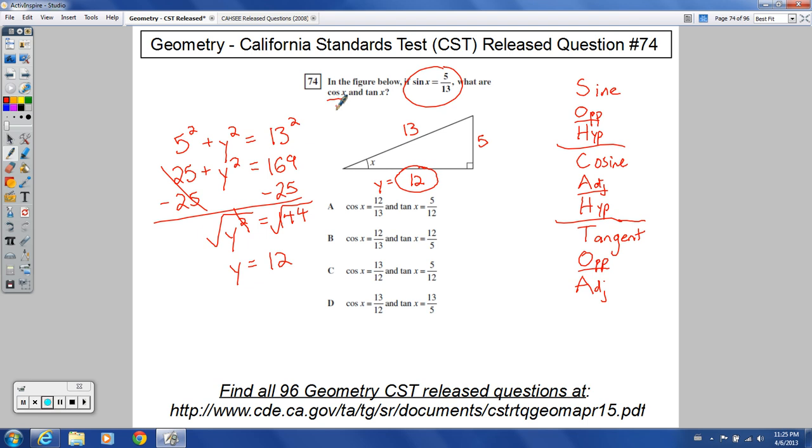That would allow me to say that the cosine of x, that would equal 5 over 13. I'm sorry, 12 over 13 adjacent over hypotenuse. So this would equal 12 over 13. And that the tangent of x, that would equal opposite over adjacent. That would be 5 over 12. And so my final answer, I should see where cosine is 12 over 13, and where tangent is 5 over 12. That's choice A for number 74.